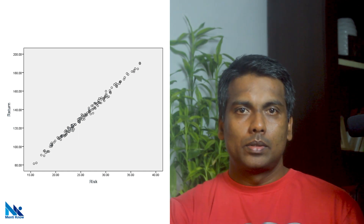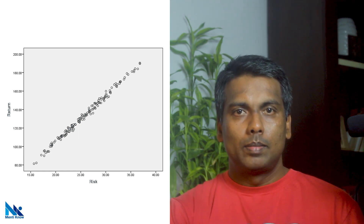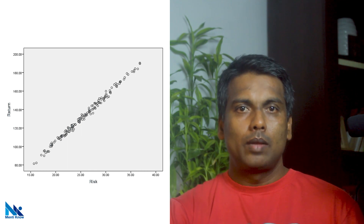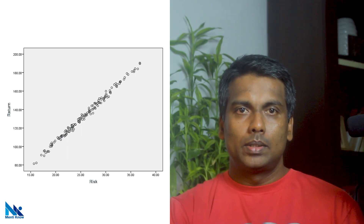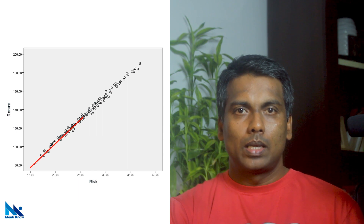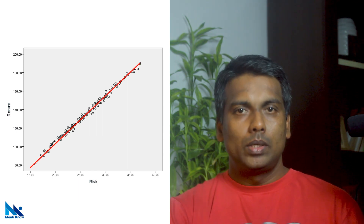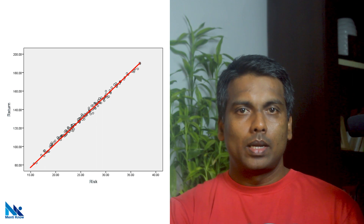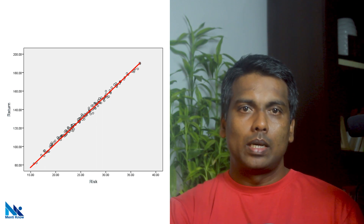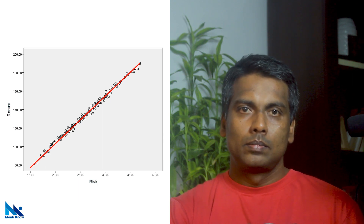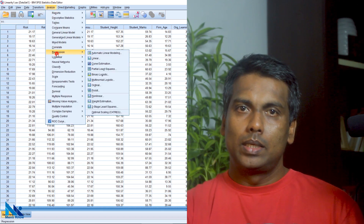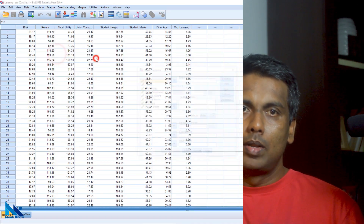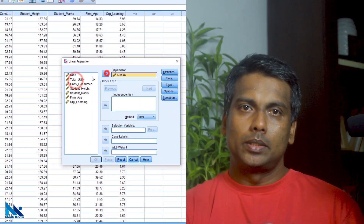Linearity refers to a situation where the dependent variable is a straight line function of each independent variable. For example, this scatterplot shows a positive linear relationship in which all the observations can be fitted nicely with a straight line. So, OLS regression analysis will be capable of estimating this relationship.